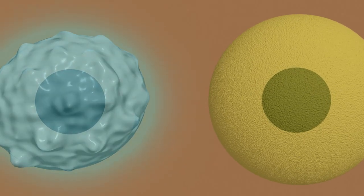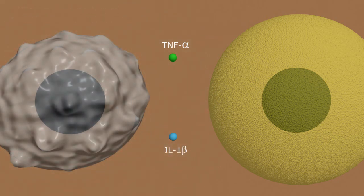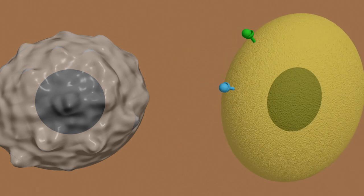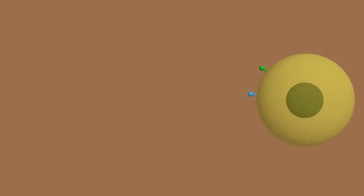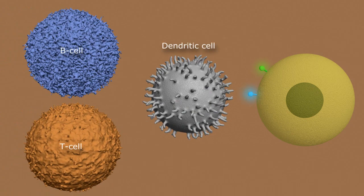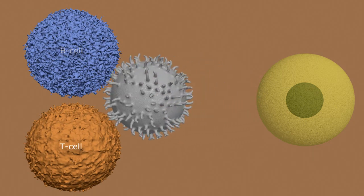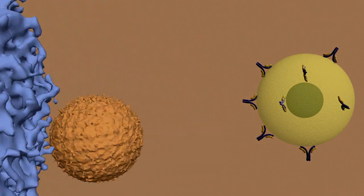Once activated, macrophages secrete pro-inflammatory cytokines, such as tumor necrosis factor alpha and interleukin-1 beta. These cytokines then bind to designated receptors on the cell surface of the meibomian gland, lacrimal gland, or corneal epithelium, and the bound complexes then act like a signaling beacon, inducing a massive influx of dendritic and other lymphocytic cells to the region, which then infiltrate and destroy the labeled cells of the meibomian glands and the ocular surface of DED patients.